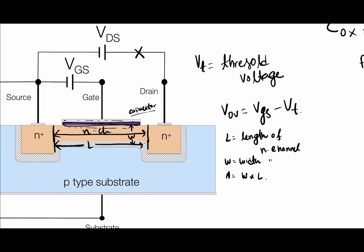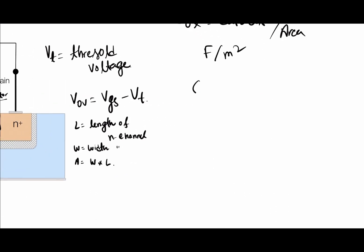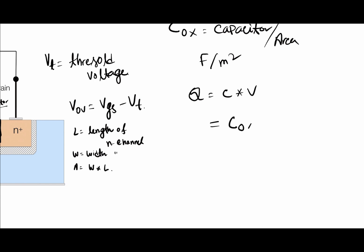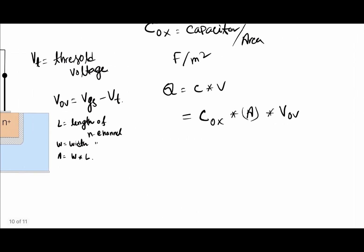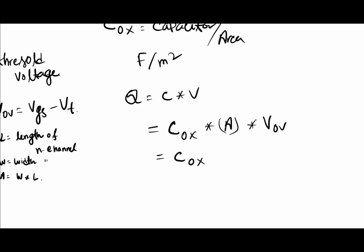We calculate the charge due to VGS with VDS not connected, meaning VDS is equal to zero. The formula for charge is Q = C × V. Since COx is the capacitance per unit area, the total charge is Q = COx × A × Vov, where Vov determines how much charge is present in the N-channel. Substituting A = W × L gives Q = COx × W × L × Vov.